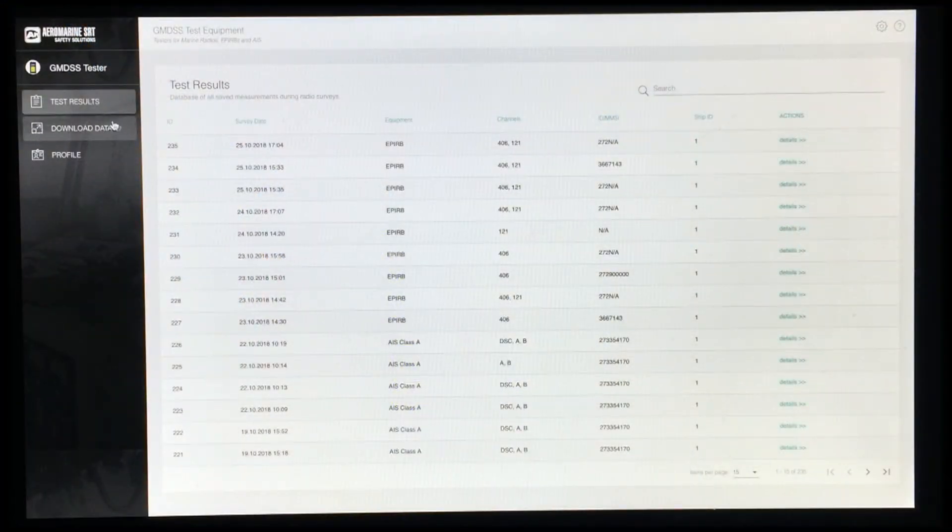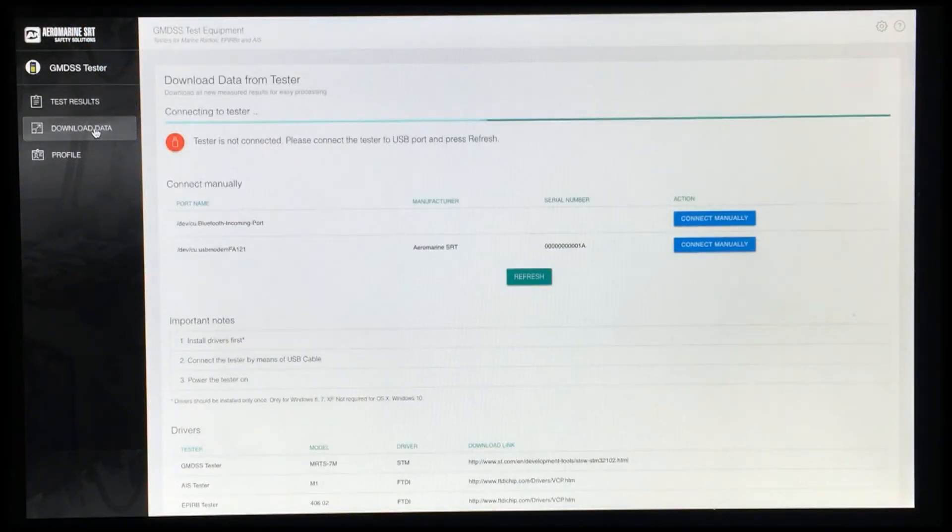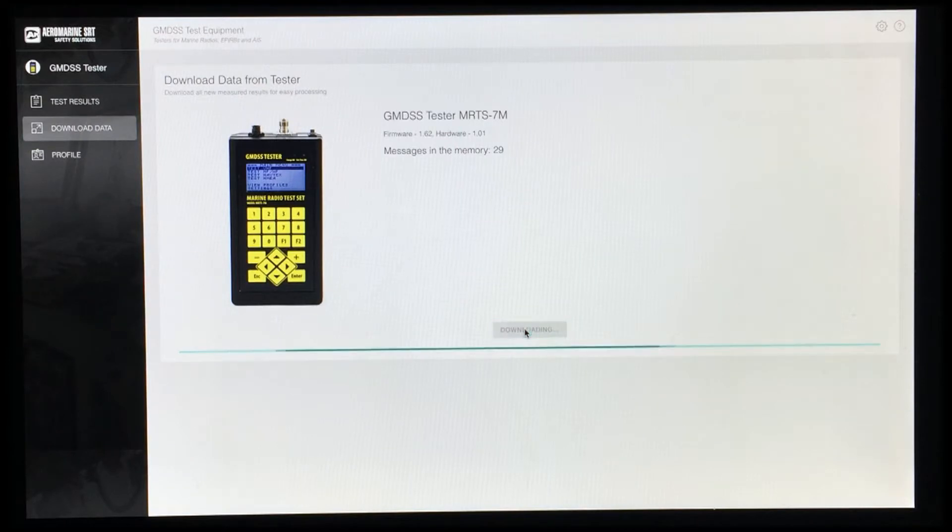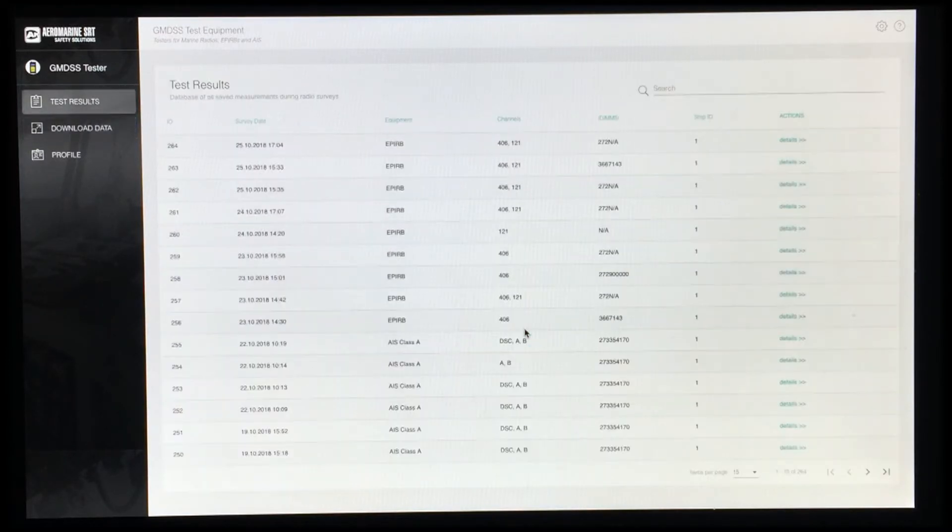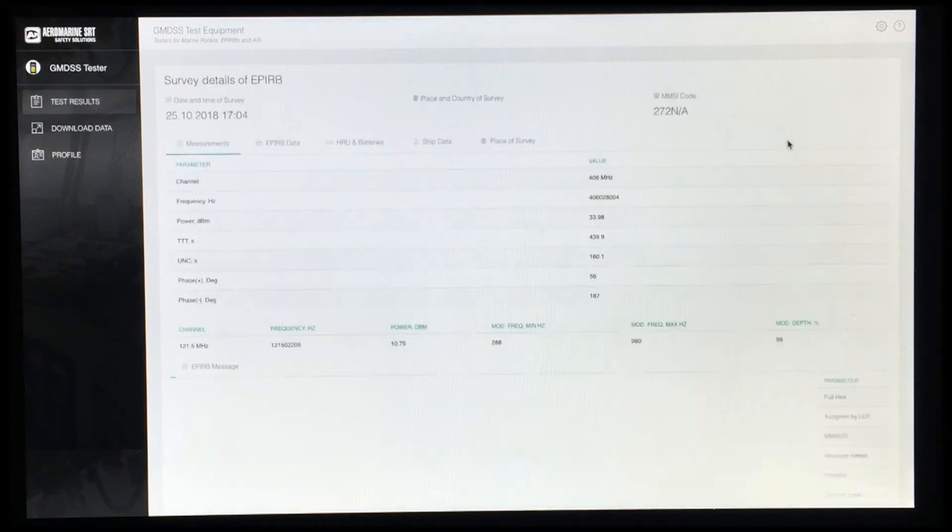In program window, we go to download data menu and press download data button. The results are now downloaded. We select the needed result and press details. We see the measurement results.